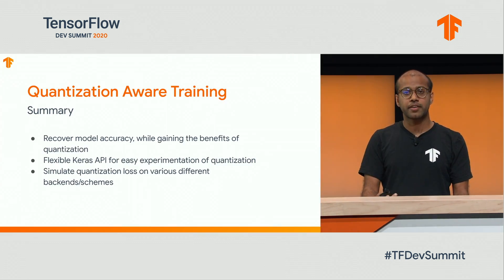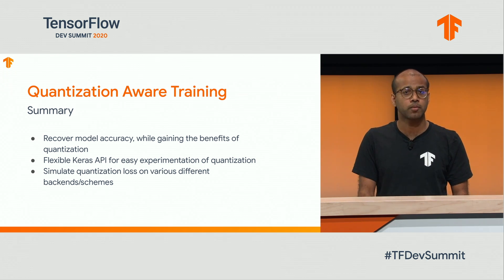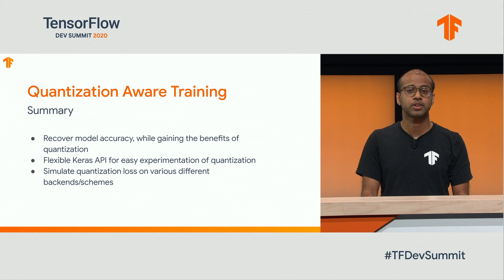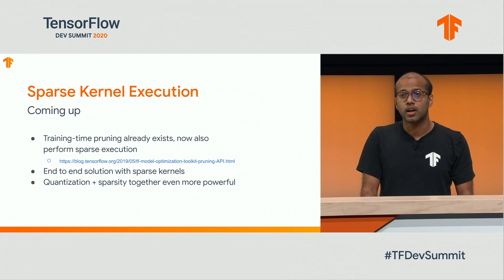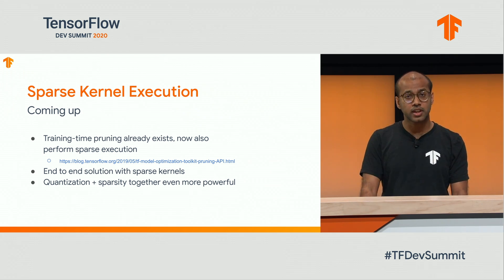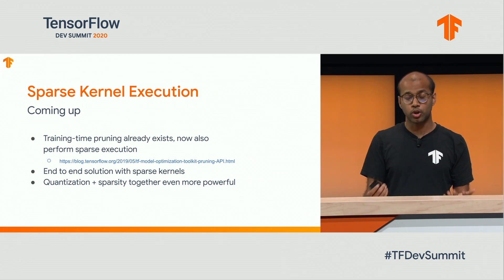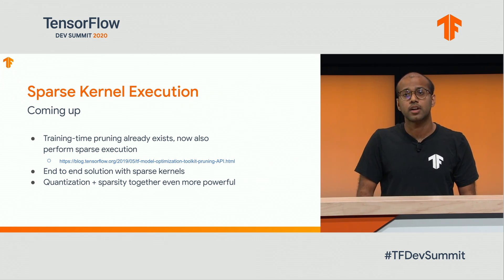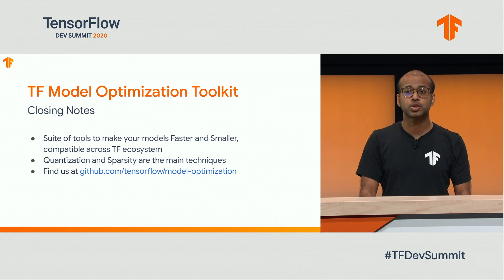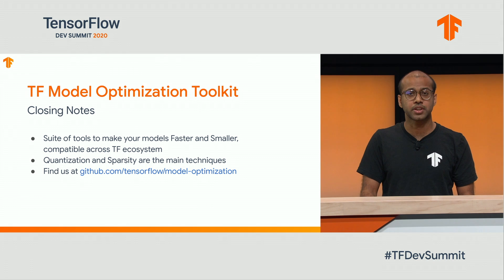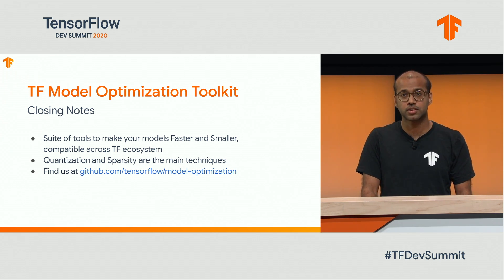In summary, quantization-aware training is an API that helps you recover accuracy while getting the benefits of quantization. It's a simple API for easy tasks but quite flexible for more complicated things, and it simulates quantization loss for various different backend schemes. Looking forward, we released the sparsity training-time API, and we're now working on sparse kernel execution — giving you an end-to-end story to train sparse models and execute them on device. You can also use quantization and sparsity together, which is quite powerful. That's the model optimization toolkit — a suite of tools that make your models faster and smaller. Find us on GitHub at slash model optimization. Please file any requests, concerns, bugs, or feedback, and we're always working on making models smaller and faster. Thank you.